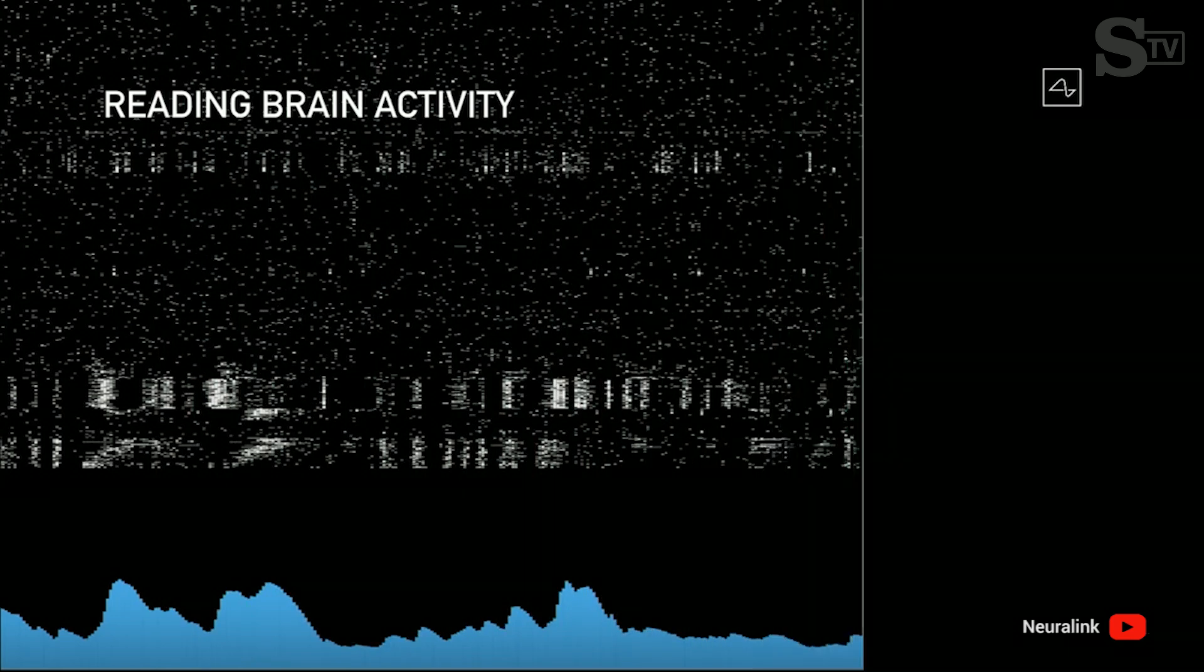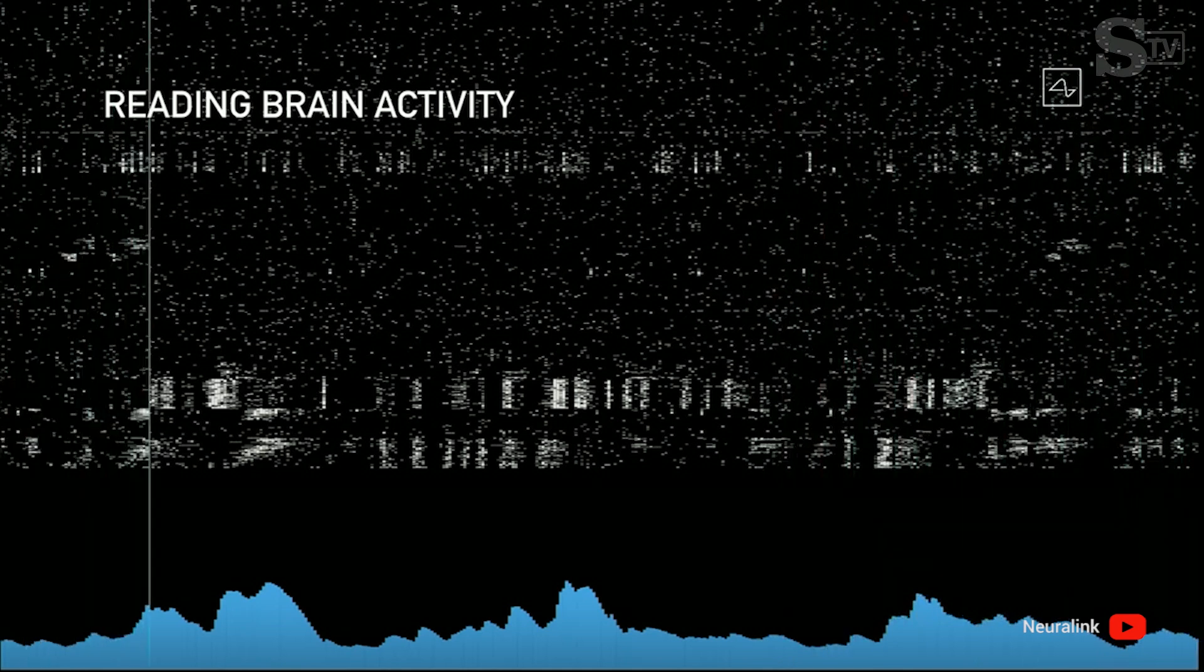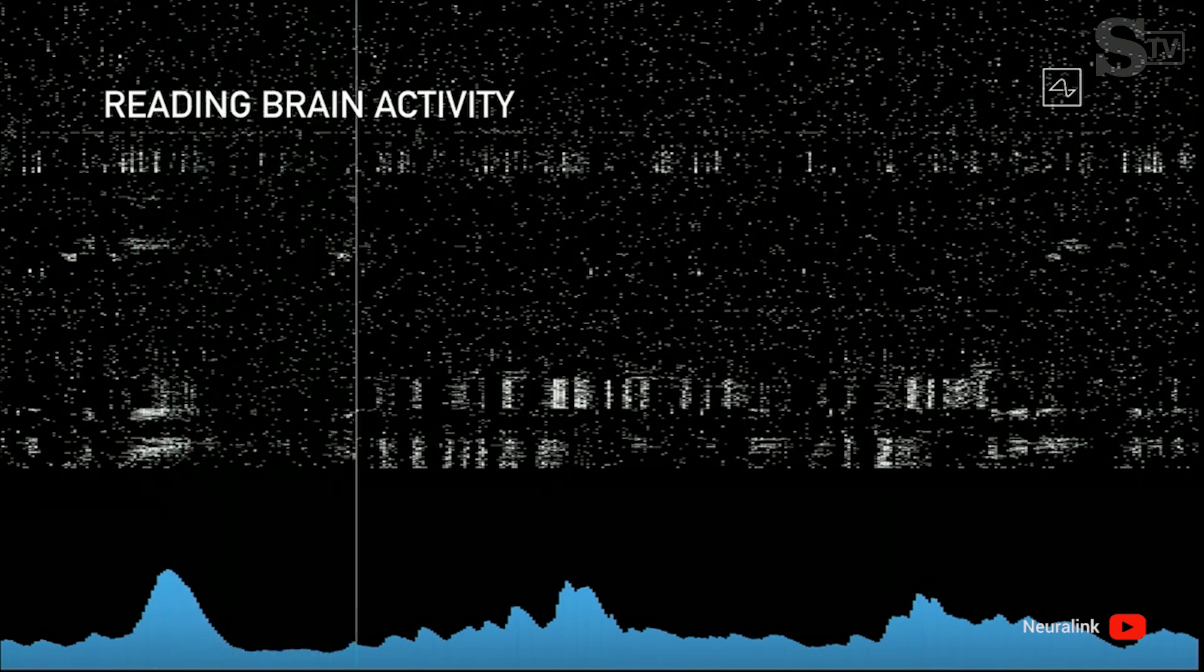Each of those dots represents a neural spike, and the blue chart at the bottom is showing an accumulation of neural spikes in that region.